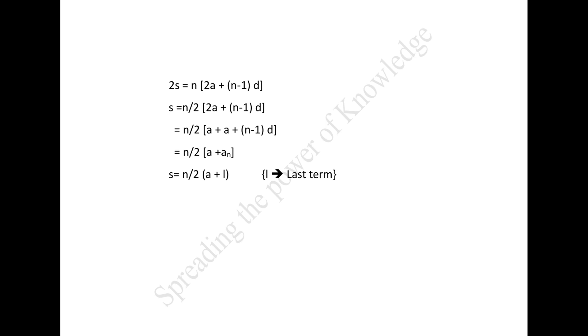If there are only n terms in an arithmetic progression, then aₙ equals l, which is the last term. Then S equals n over 2 times (a plus l).